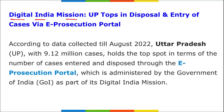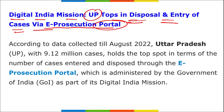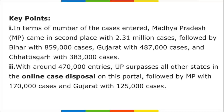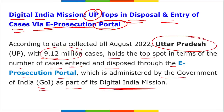Under the Digital India Mission, Uttar Pradesh has topped in disposal and entry of cases via the e-Prosecution portal. UP has secured the top position with 9.12 million cases, holding the top spot in terms of number of cases entered and disposed through the e-Prosecution portal, which is administered by the Government of India. Madhya Pradesh came in second place with 2.31 million cases.